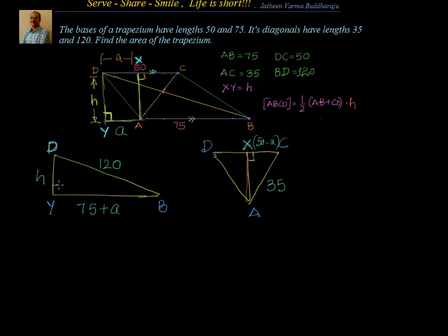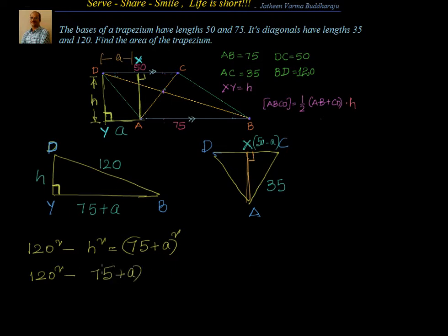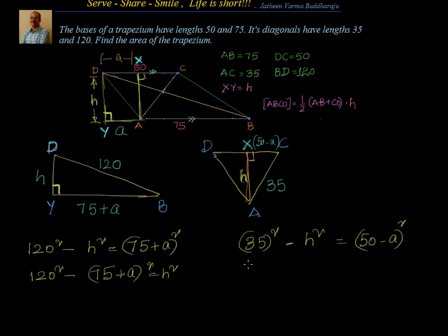Applying the Pythagorean theorem on triangle BDY: 120² minus H² = (75 + A)², or equivalently 120² minus (75 + A)² = H². For triangle AXC, the diagonal AC = 35, so: 35² minus H² = (50 minus A)², or 35² minus (50 minus A)² = H².